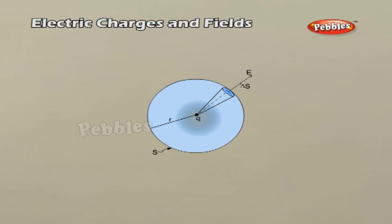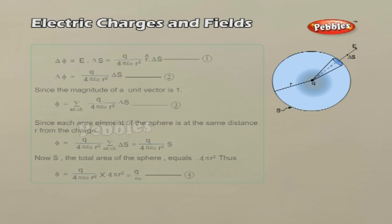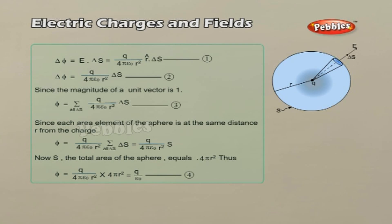Gauss's Law. As a simple application of electric flux, consider the total flux through a sphere of radius R which encloses a point charge Q at its center. Divide the sphere into small area elements. The flux through each area element delta S is given by equation 1. Since the normal to a sphere at every point is along the radius vector, the area element delta S and R vector have the same direction, so equation 1 becomes equation 2. The total flux through the sphere is obtained by summing over all area elements, giving equation 3. Equation 4 is a simple illustration of the general result called Gauss's law.